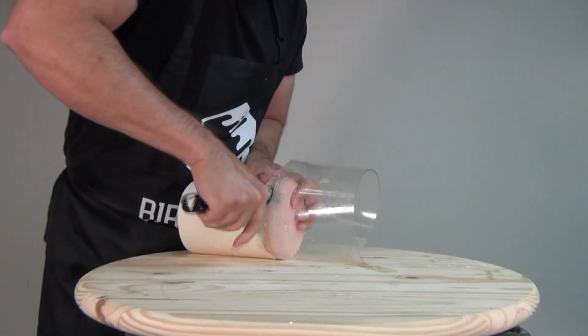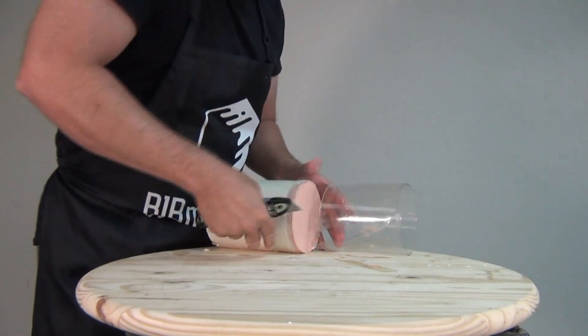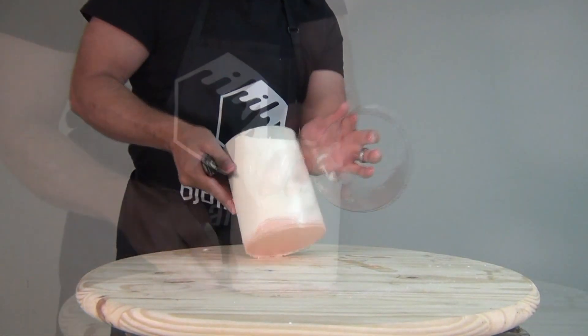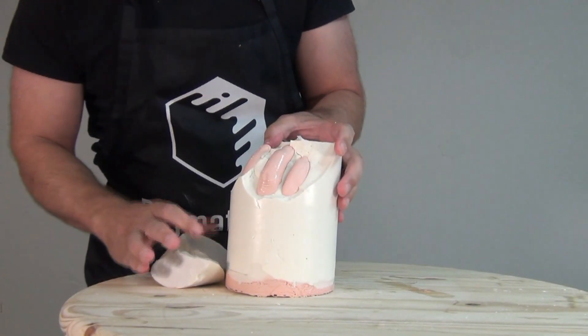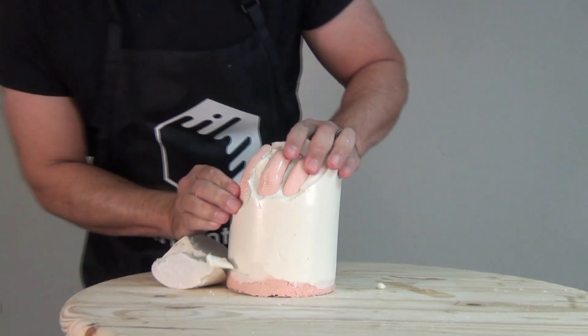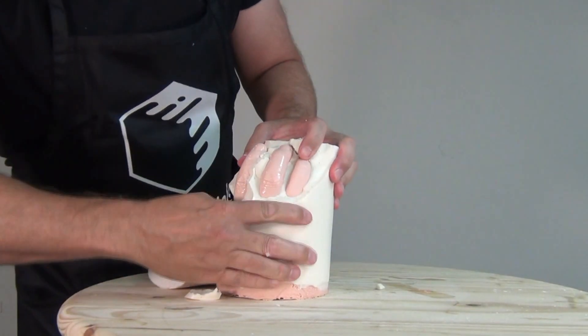So learn from me, viewers. Just remember if you're doing this process with one of these tubes like this, make sure you release the inside of that tube. At least when you're casting resin like this, that you release the inside of that tube with high temp paste wax.